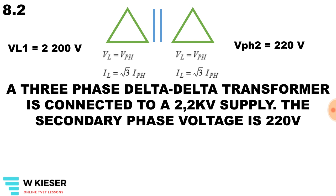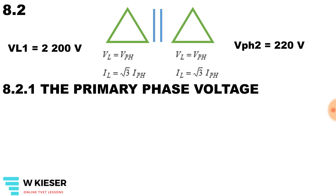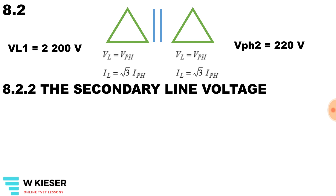For the final calculation — a three-phase delta-delta transformer — there's a little trick to this question. A three-phase delta-delta transformer is connected to a 2.2 kilovolt supply and the secondary phase voltage is 220 volts. In a delta connection, VL equals V phase, so the primary phase voltage equals the primary line voltage: 2200 volts. For the secondary line voltage, since it's also delta, VL equals V phase, therefore the secondary line voltage is also 220 volts.